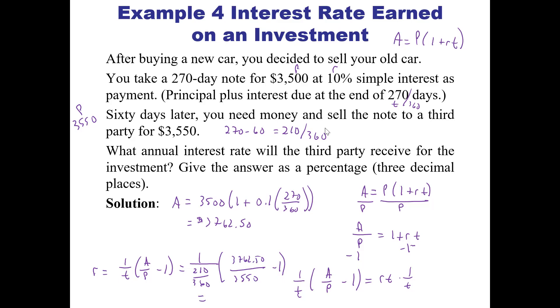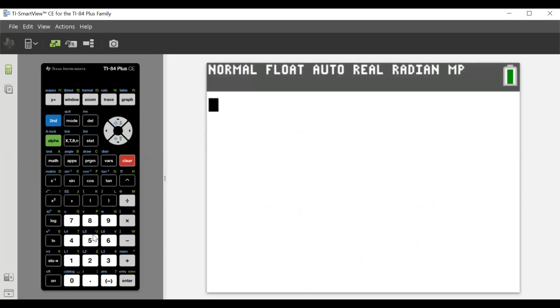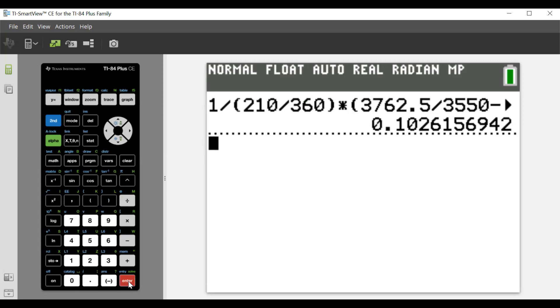All right. So go back over here. All right. So we had 1 divided by, and then we had 210 divided by 360. And then that was times, and then we had the quantity, then that was A over P. So the 3762.5 divided by the P, which is 3550, and then minus our 1, and hopefully I have all that typed in correctly. So that comes out 10.2615.